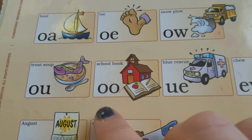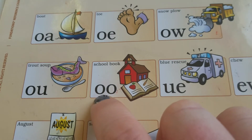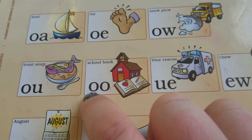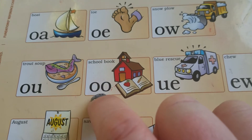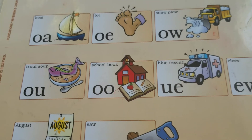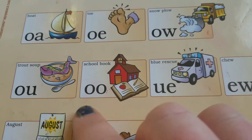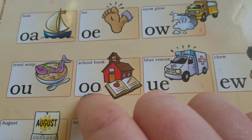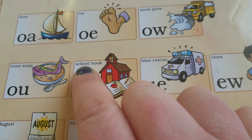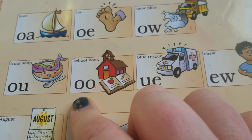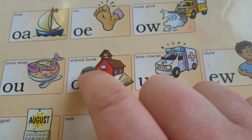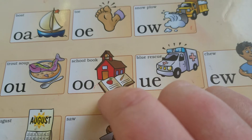The diphthong we're going to focus on today is OO. A diphthong is when two vowels are together and they make a whole new sound, not like a vowel team. So we have OO as in school, and then we have OO as in book.